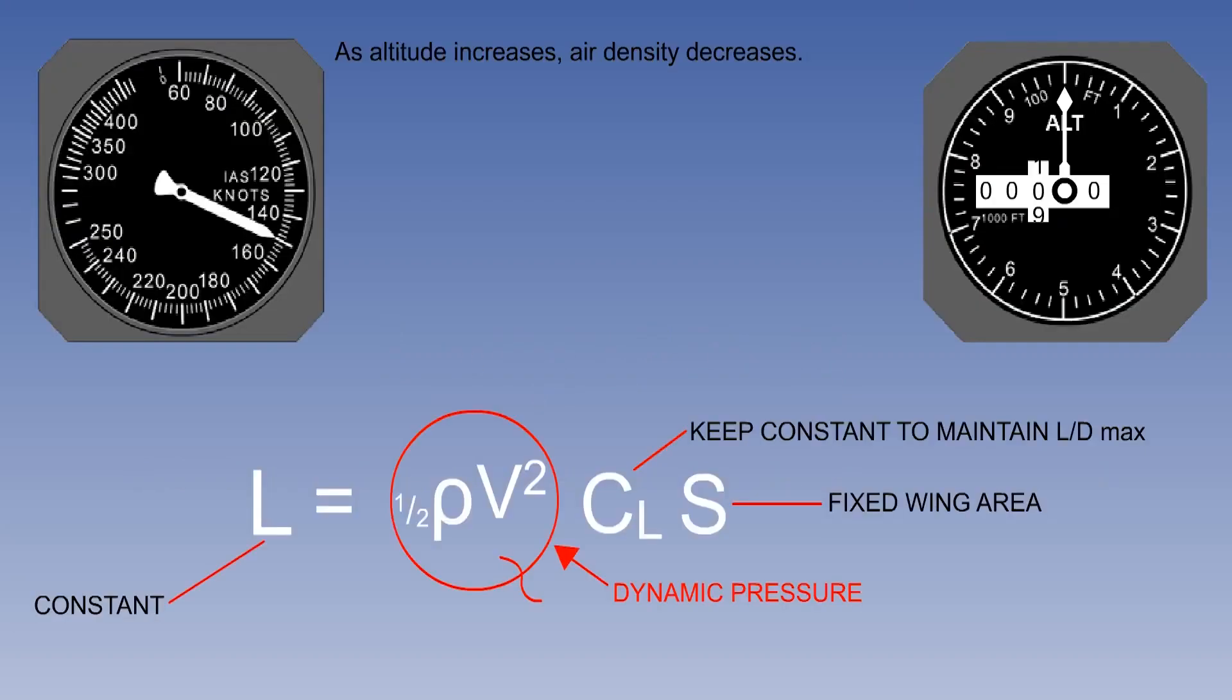There is a direct relationship between density and the TAS that an aircraft will achieve for a given IAS, usually in connection with a change in altitude, since density decreases as altitude increases. Considering the ICAO standard atmosphere or ISA, in which the density at 40,000 feet is a quarter of that at mean sea level, we can see the changes in relationship that occur between TAS and IAS because of density change.